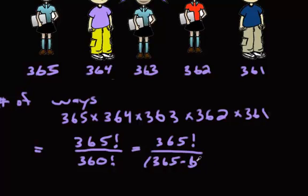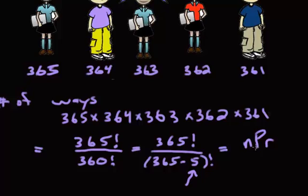Why do we write it that way? We had 5 students, and that 5 represents the number of people in our group. You might recognize this formula — it's the NPR formula, the number of permutations, with N being 365 and R being 5. So we can write this as 365 P5. That's the number of ways 5 people can all have different birthdays.